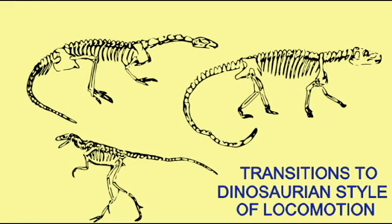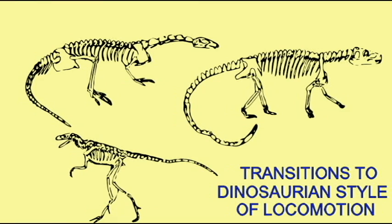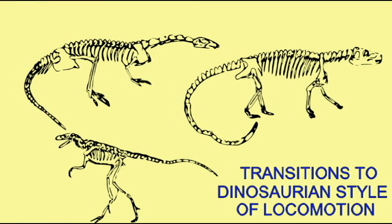As one studies the archosaurs of the Triassic, one can see gradual transitions. First, in body posture.